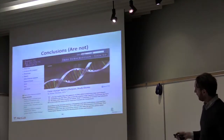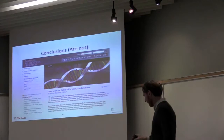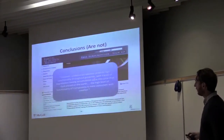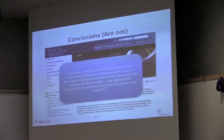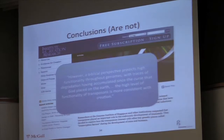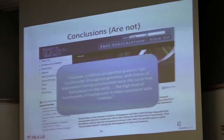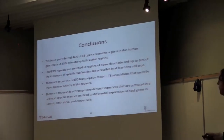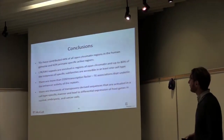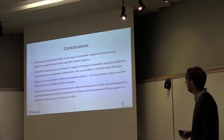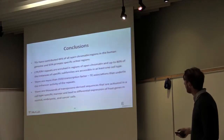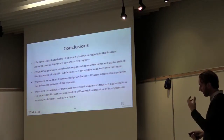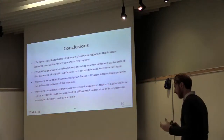Just to summarize this part — some of this work was picked up by the Institute for Creation Research. Here's what they concluded: a biblical perspective predicts high functionality throughout the genome, and the high level of functionality of transposons is more consistent with creation. Those are not my conclusions. My conclusions are that transposable elements have contributed a lot of the regions of open chromatin in the human genome, especially in primate-specific active regions. There are lots and lots of associations between transcription factors and transposable elements, and it really looks like these types of sequences have been a major source of genomic innovation.